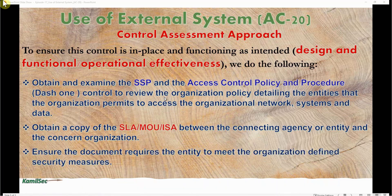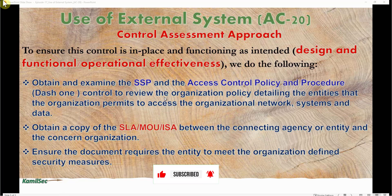Finally, ensure the document requires the entity to meet the organizationally defined security measures. Because if they are connecting to your system, you have to come up with your SLA — the service level agreement — the memorandum of understanding or memorandum of agreement, as well as the interconnection security agreement. You spell out all the security measures, all the security requirements — everything you need before an external entity connects to your system or you connect to an external entity and share data. You need to spell all the details in the SLA, the MOU, and the ISA.